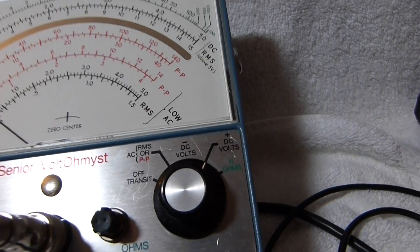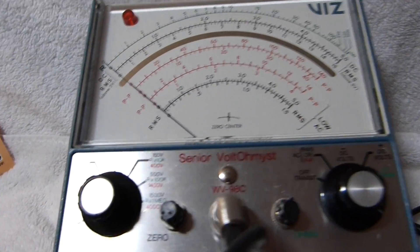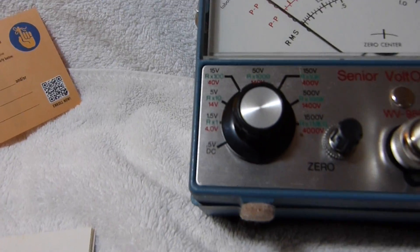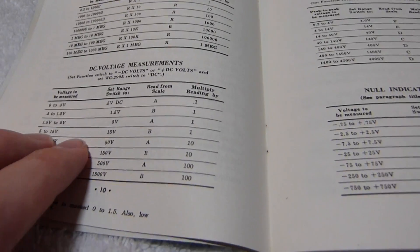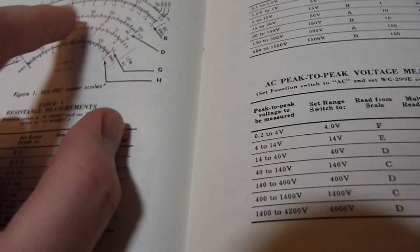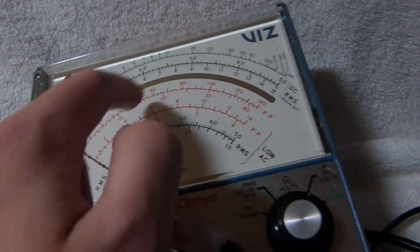I've got it connected to a battery right now and set to positive DC volts. Since it's a 9-volt battery, I've got it set to the 15-volt scale, which means that I need to read scale B, which is the lower one here, this scale.